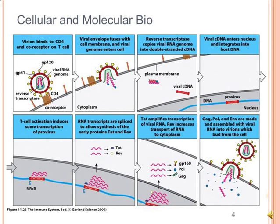Now the actual replication process: the virion binds to the CD4 receptor and co-receptor on a T cell, which is mediated by the GP120 and GP41 proteins. After that, the envelope fuses with the cell membrane and the viral genome enters the cell. Then reverse transcriptase copies the viral RNA genome into a double-stranded cDNA, which is then integrated into the host DNA by integrase.